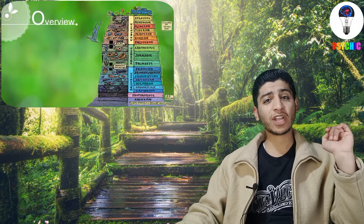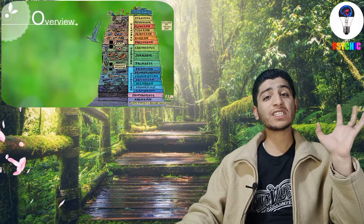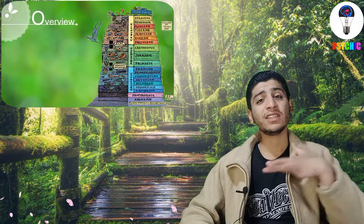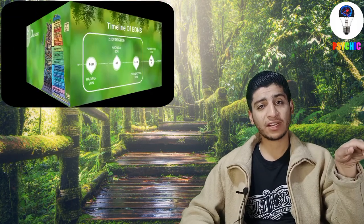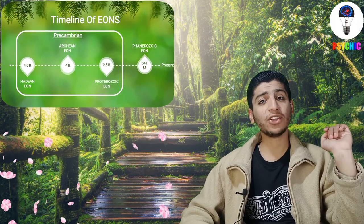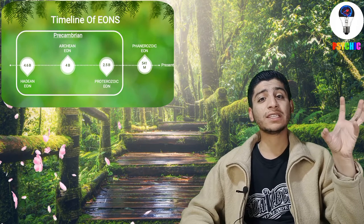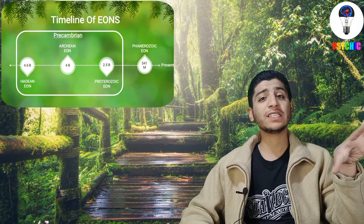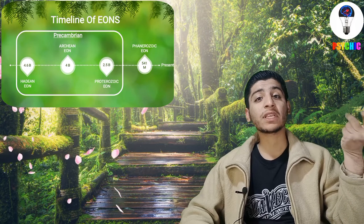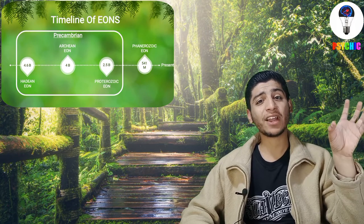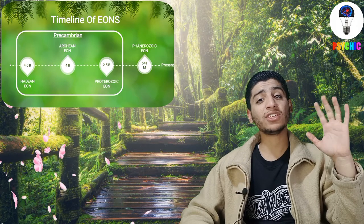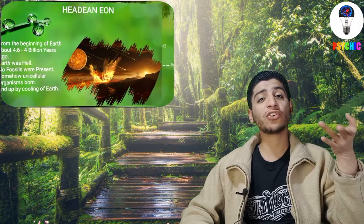It was a time when earth was completely hellish — there was no life on earth at that time. After it, the second eon comes which is called the Archean eon. The Hadean eon ended with an ice age, and after it many kinds of bacteria and unicellular organisms came into existence.